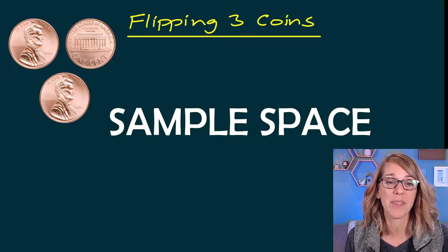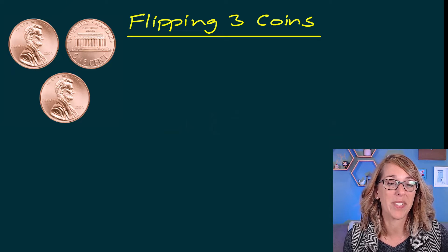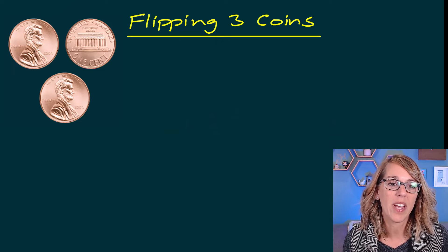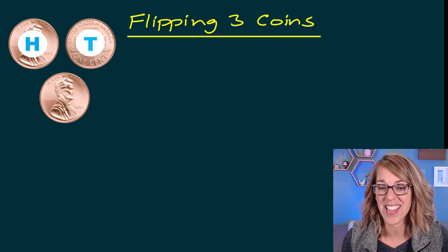I want to start out with the sample space. Our sample space is going to consist of the possible outcomes. So I know that when I'm flipping a coin, I could either land on heads or on tails.